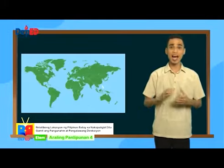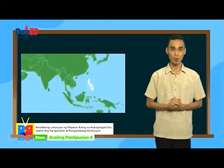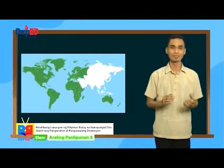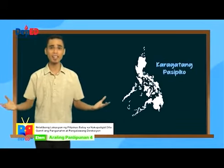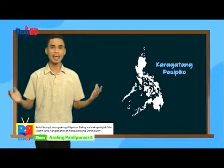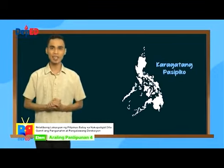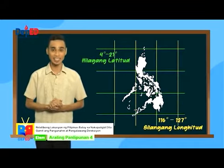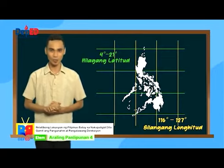Ang Pilipinas, ang ikalawang pinakamalaking kapuloang natatagpuan sa rehyon ng Timog Silangang Asia na nasa gawing itaas ng Ekwador. Ang Asia ang pinakamalaking kontinente sa buong daigdig. Tinagurian ang Pilipinas bilang pintuan ng Asia dahil sa kinalalagyan nito sa Pasipiko at bilang bahagi ng kontinente at lupalop ng Asia. Nasa pagitan nito ng latitude na 4 degree hanggang 21 degree hilagang latitude at 116 degree hanggang 127 degree silangang longitude.